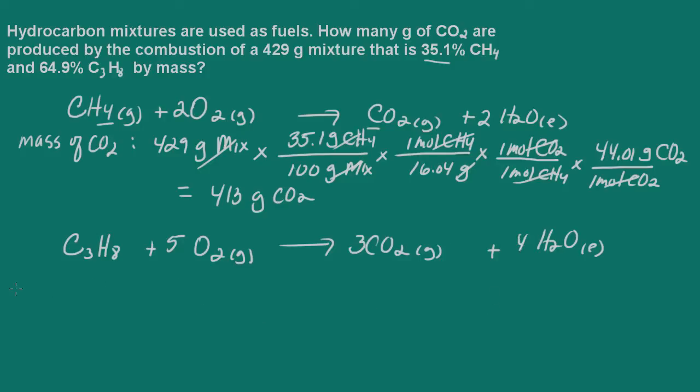And again, we're going to determine the mass of carbon dioxide. And again, we have 429 grams of mixture. And let's see, 64.9% is due to the propane. So that means that there are 64.9 grams of propane in 100 grams of mixture.